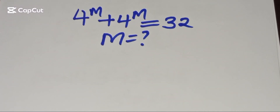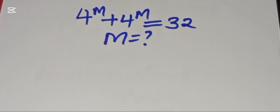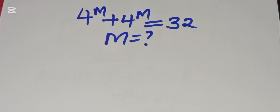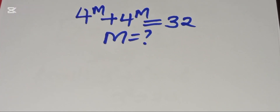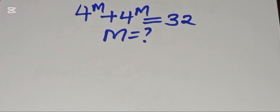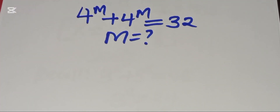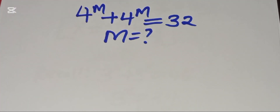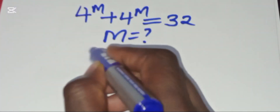Let's find the solution to this exponential equation: 4 raised to the power m plus 4 raised to the power m is equal to 32. What is the value of m?